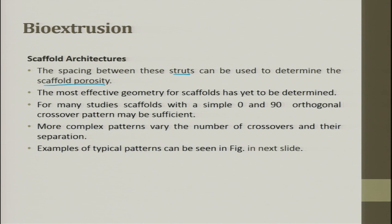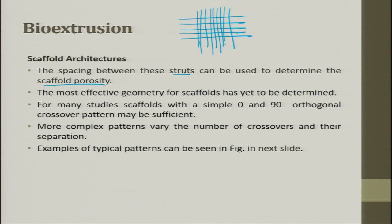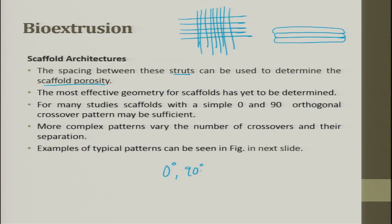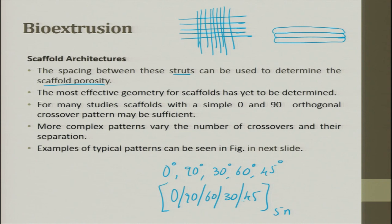The most effective geometry for scaffolds has yet to be determined. For many studies, a simple 0 and 90-degree orthogonal crossover pattern may be sufficient — you put the first layer in one direction, the next layer perpendicular, and the third layer at another angle. By changing the orientation you strengthen the material. More complex patterns can use varying crossover angles: 0, 90, 30, 60, and 45 degrees, or a combination such as 0/90/60/30/45 repeated five times, to distribute strength across the scaffold.